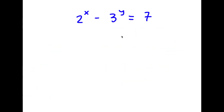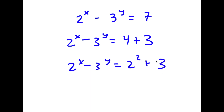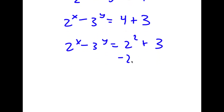In this problem, I have 2 to the power of x minus 3 to the power of y is equal to 7. I'm going to rewrite 7 as 4 plus 3. So now I have 2 to the power of x minus 3 to the power of y equals 4 plus 3, and 4 is the same as 2 squared.